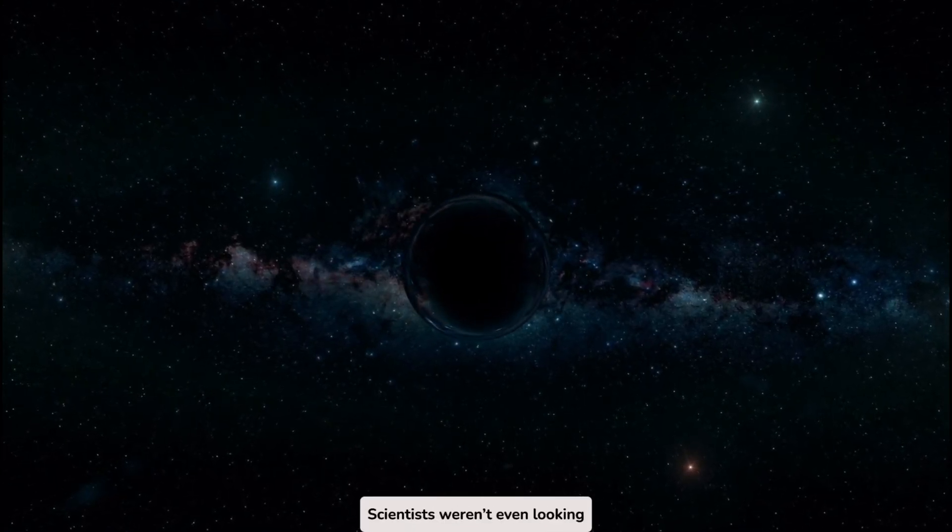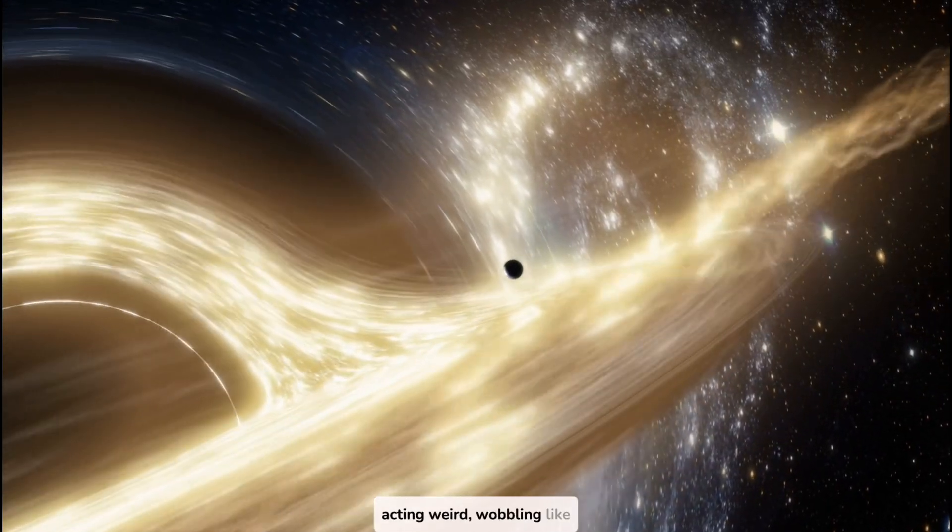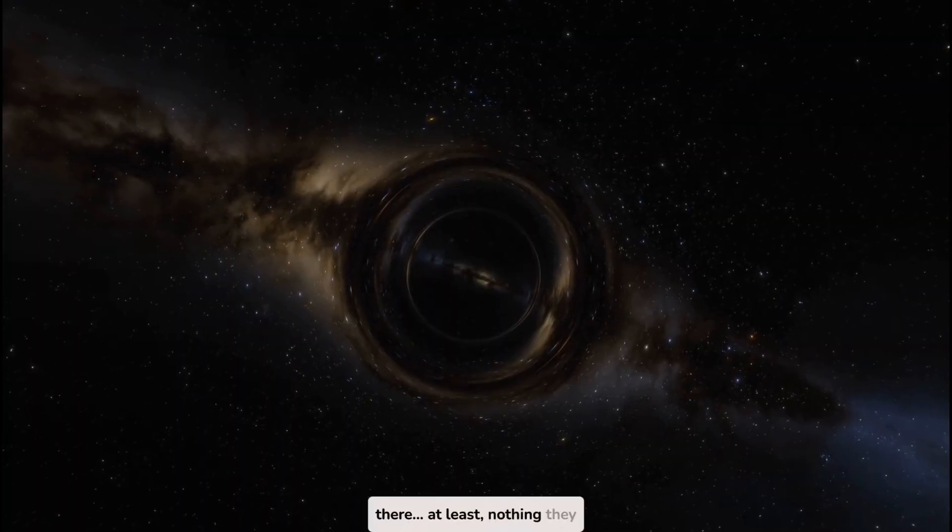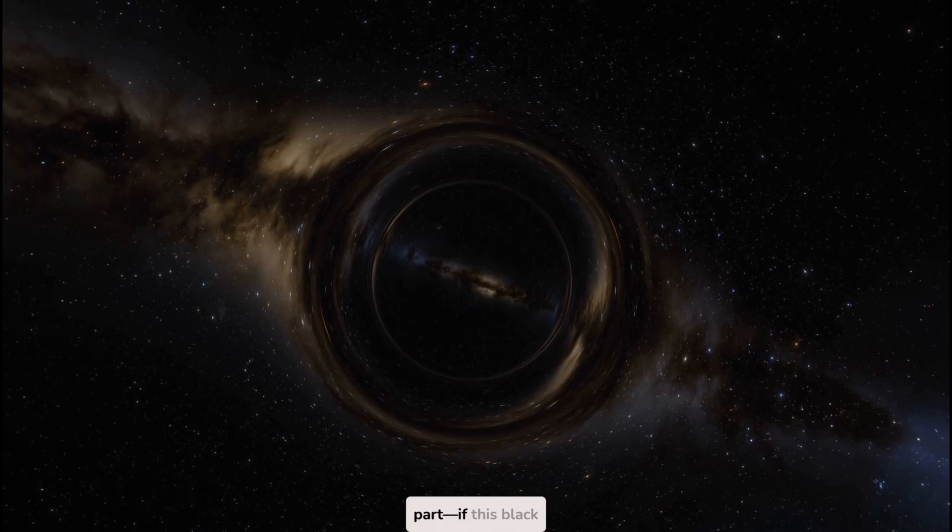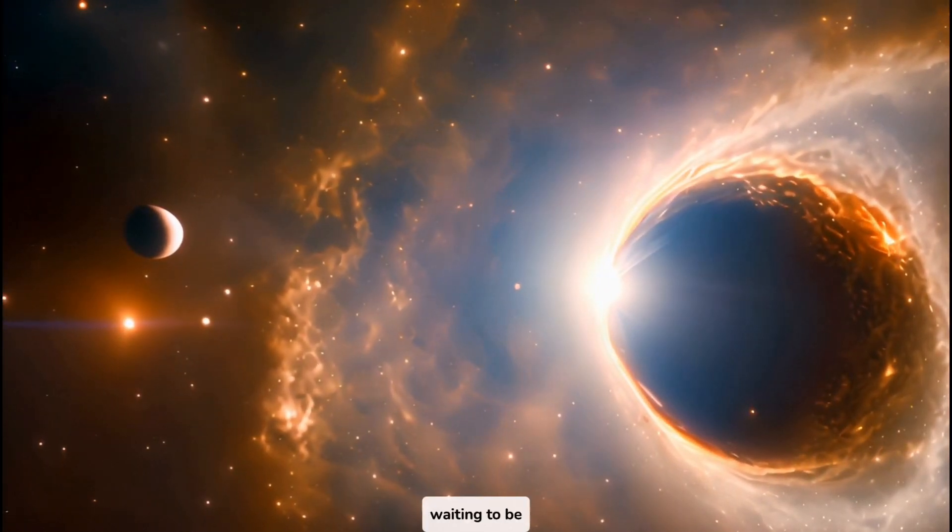Scientists weren't even looking for it. They only found it because a nearby star started acting weird, wobbling like something was pulling on it. But there was nothing there. At least, nothing they could see. And here's the scariest part. If this black hole was hiding right next door, how many more are out there waiting to be discovered?